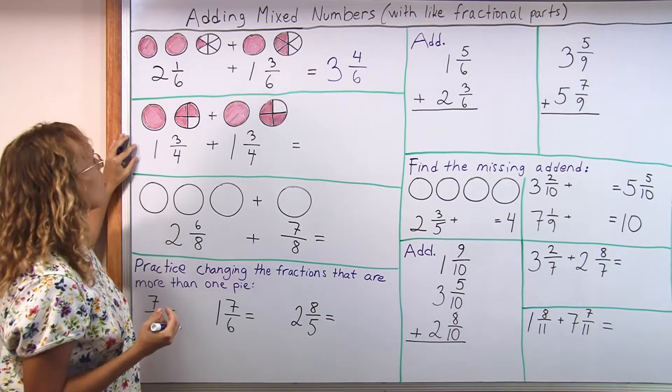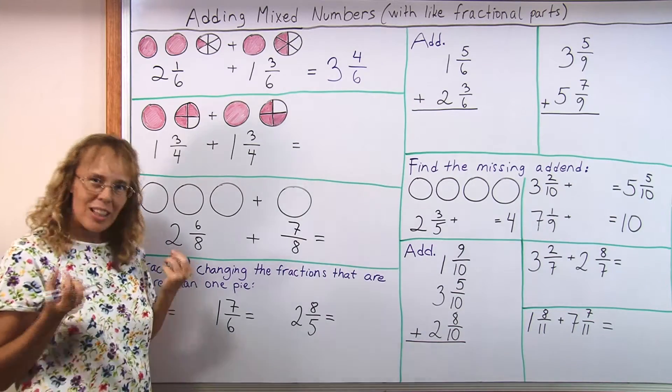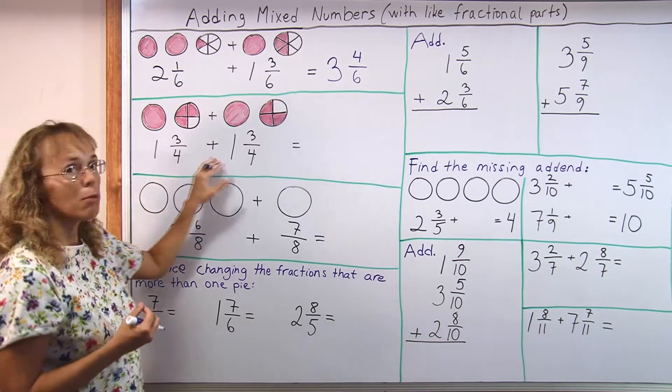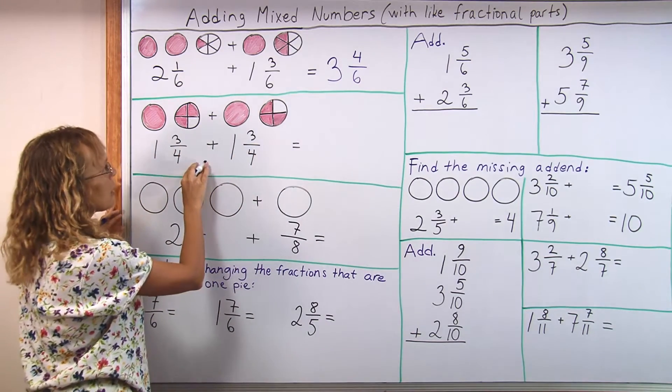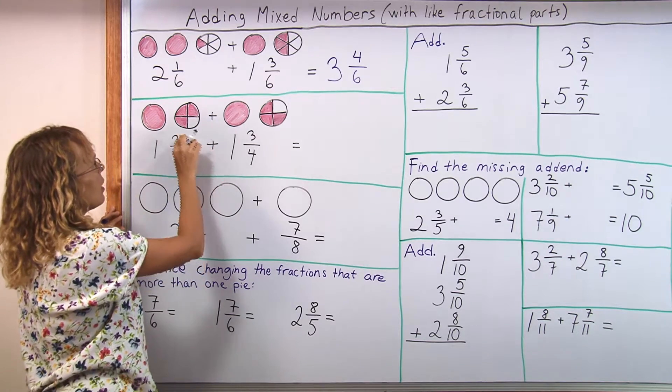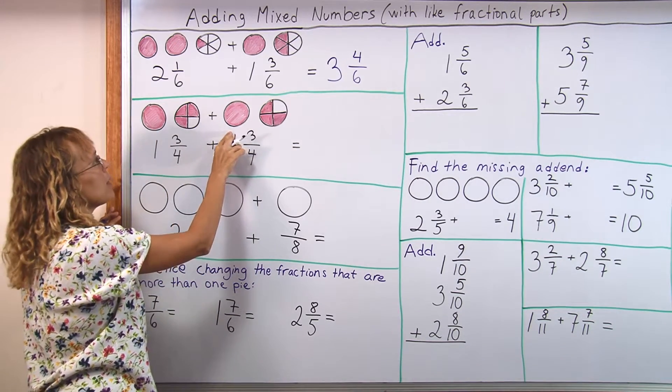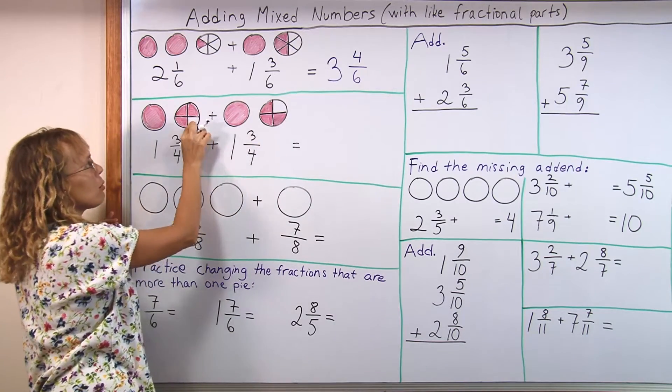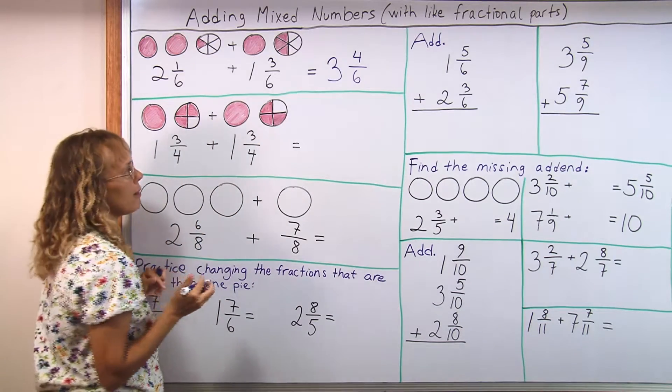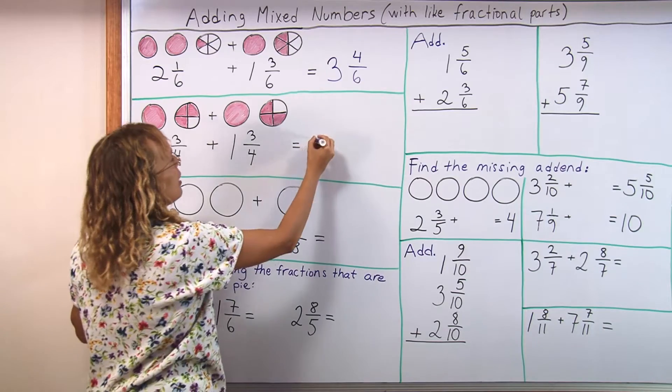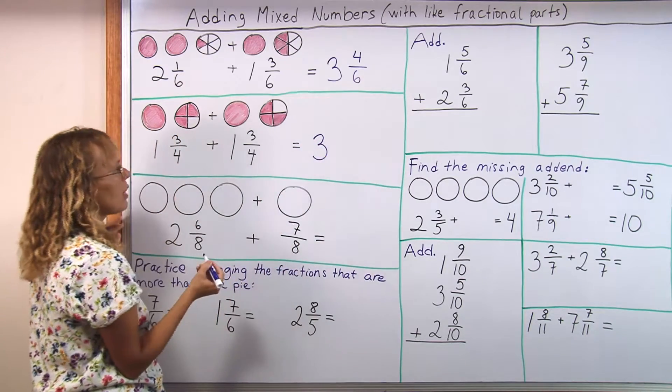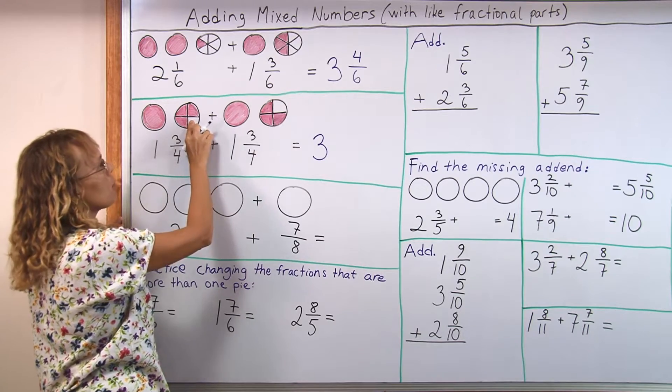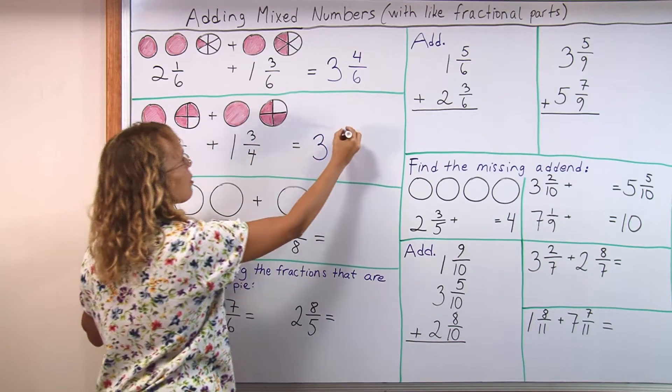But now we go to a problem that will have a little bit of a complication. You add 1 and 3 fourths and 1 and 3 fourths. And now what happens is that we have two whole pies, but if you put this fourth from here over here, you will get the third whole pie, right? So we have to write 3. This part here will go here to fill a third whole pie, and then 2 fourths are left over.